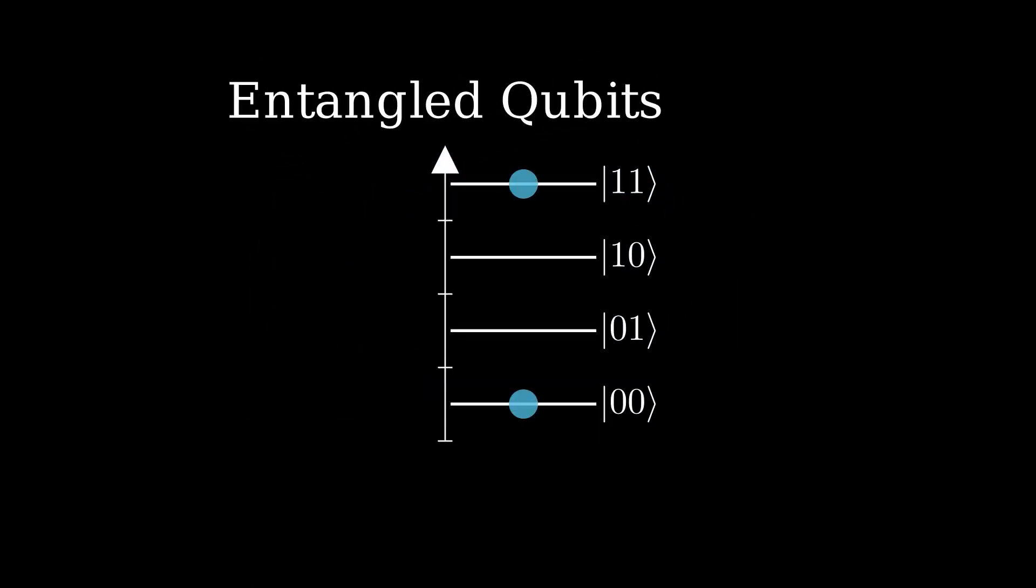One such example is this bell state. In this specific entangled state, if qubit 1 is 0, qubit 2 is also. If qubit 1 is 1, qubit 2 is also. But crucially, we don't know which state the pair is in until we measure. So our system is in a superposition of two possibilities. But note here that the combinations 0 1 and 1 0 do not appear. That's because the system is entangled, and the state of the second qubit is completely determined by the state of the first.